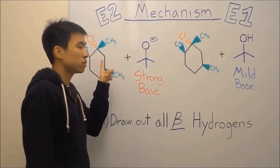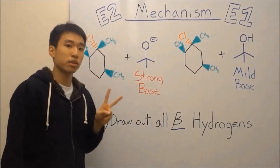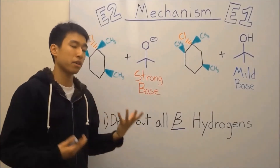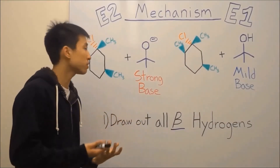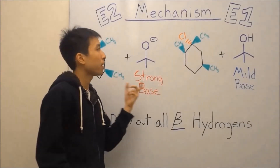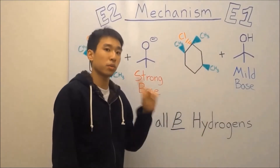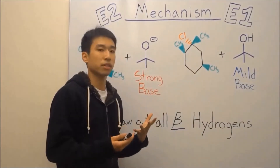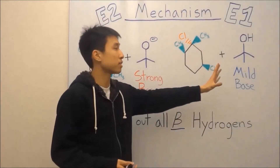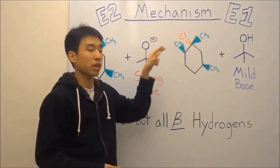For E2, you want a strong base, since E2 means that two molecules are going to have an effect on how fast the reaction occurs, so both molecules need to be reactive. But for E1, all you need is a mild base, because only one molecule is going to have an effect on how fast the reaction occurs — and that's not going to be your base. It's not going to start the reaction; it's going to be your substrate with your leaving group chlorine.